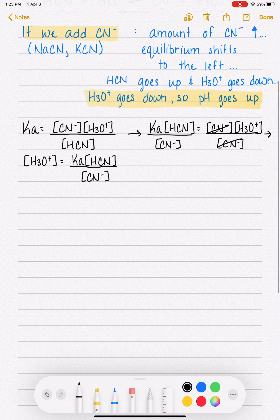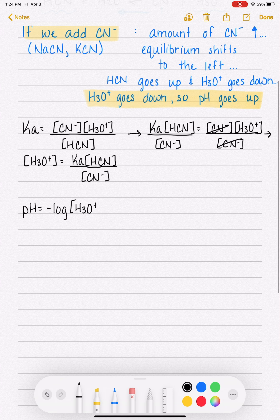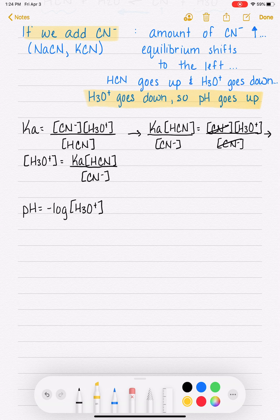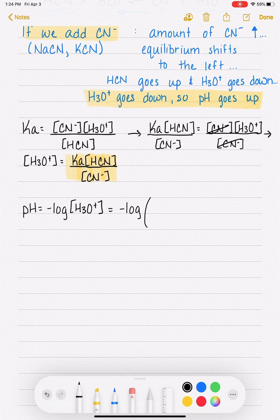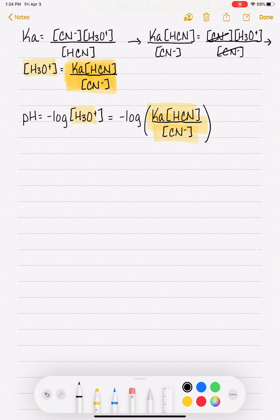Because like I said, if we want to calculate the pH of a solution, we need to take the negative log of the H3O plus concentration. And for this particular system, the H3O plus concentration can be determined by Ka times HCN over CN minus. So let's just take that, what I just highlighted in yellow, and let's plug that in for H3O plus. So all that I have done is use this term right here, which is equal to H3O plus, and plug it into the pH equation right there.